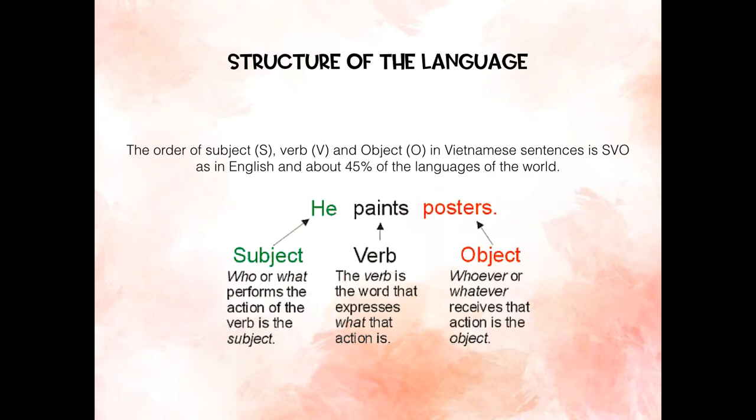The structure of the language: the order of the subject, verb, and object in Vietnamese sentences is SVO, as it is in the English language and about 45% of the languages of the world.